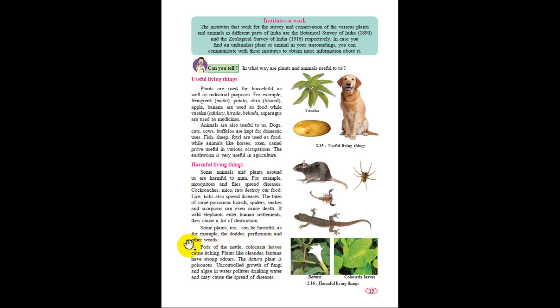Some plants can also be harmful. For example, Parthenium and other weeds. Parts of the nettle colocasia leaves cause itching. If you touch these plants, you will feel itching in your body. Plants like oleander, lantana have strong odors. The datura plant is poisonous. Uncontrolled growth of fungi and algae in water pollutes drinking water and may cause the spread of disease. In this way, some plants and animals are useful and some are not.